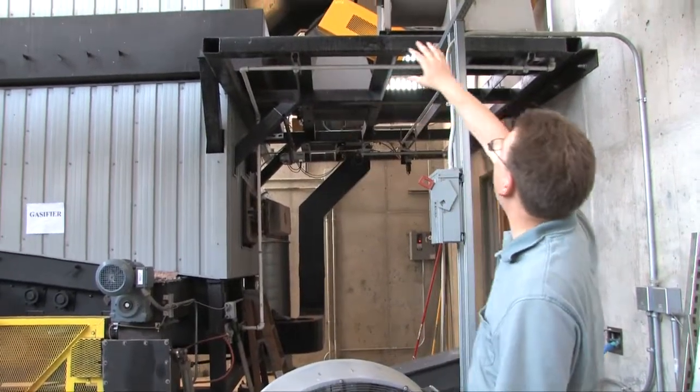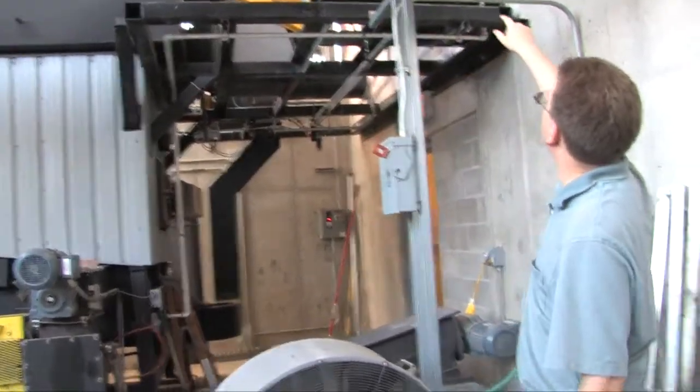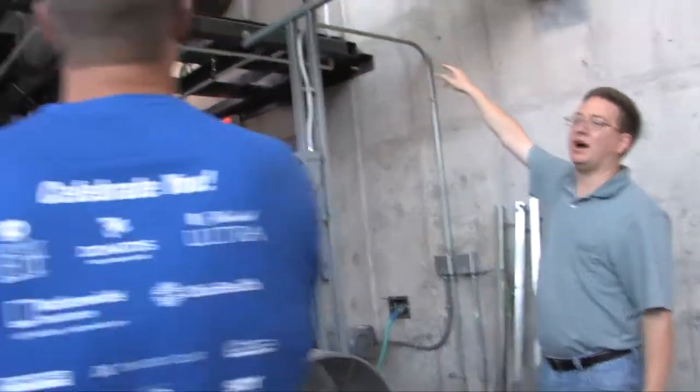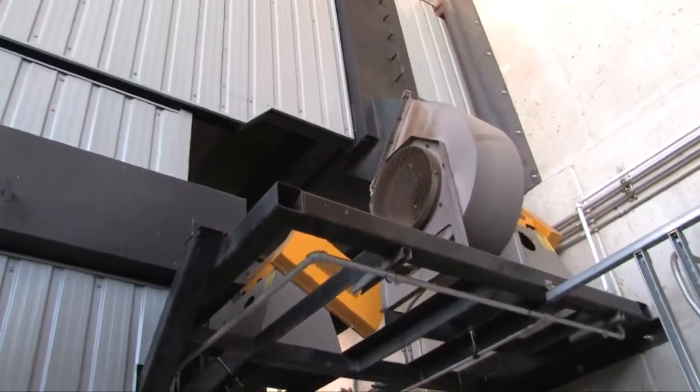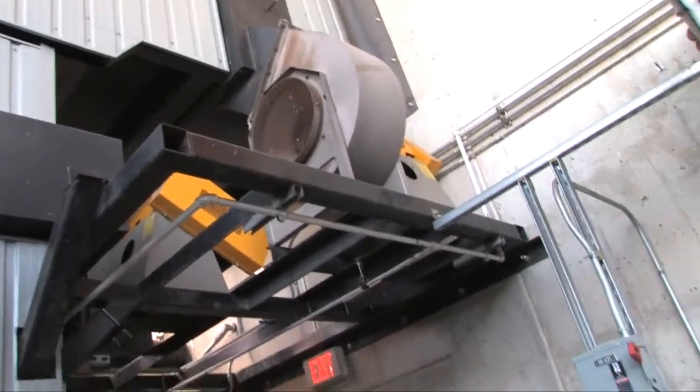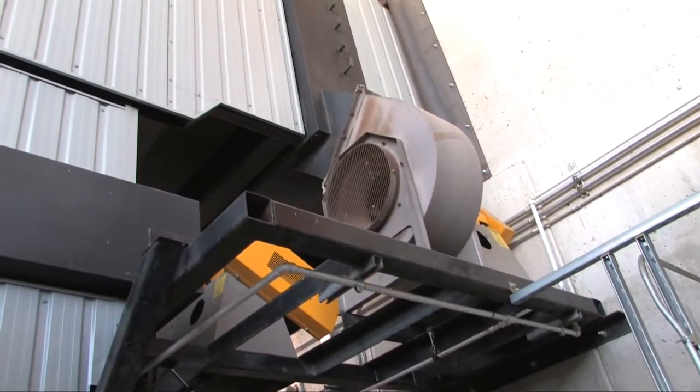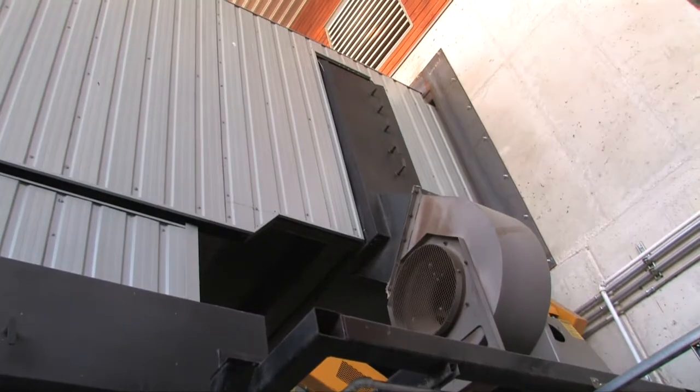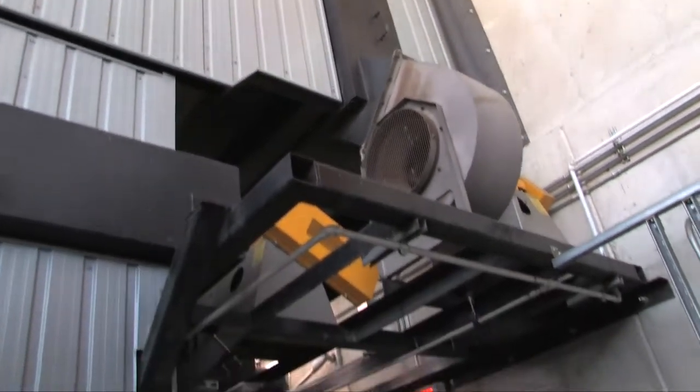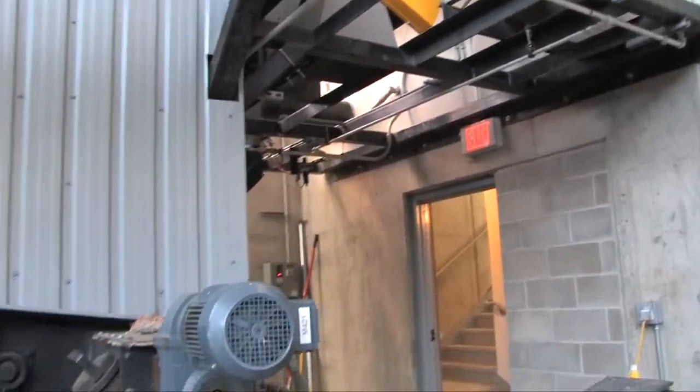And then once we get the gas off it, starting to go up that duct, we have this fan here which will add more oxygen. Once you add the secondary oxygen in there, it starts the combustion process. So they call this a closed-coupled system because right after the gasifier, you start combustion. There are a lot of gasifiers that do have quite a distance between where they use the gas and where they produce it.